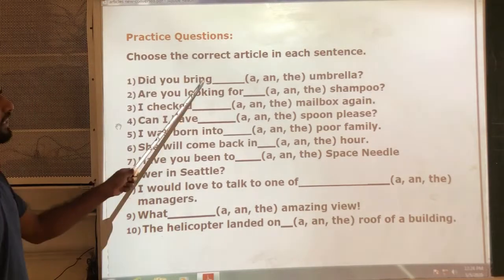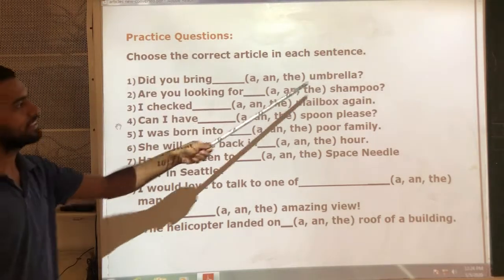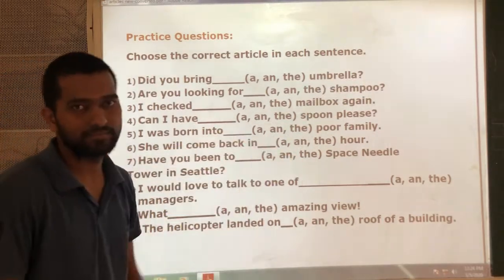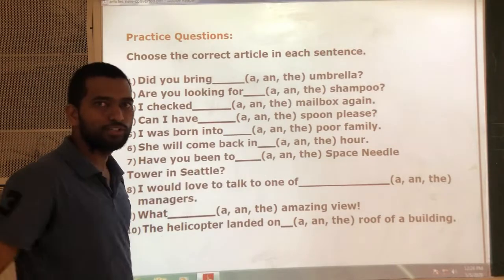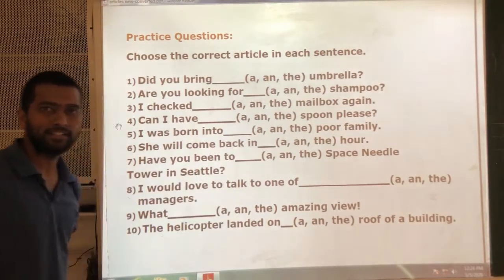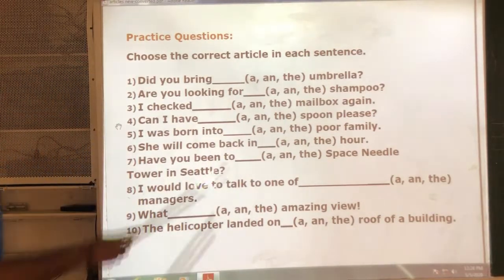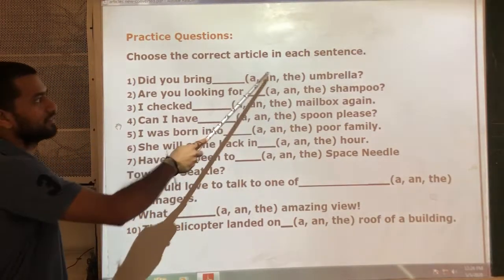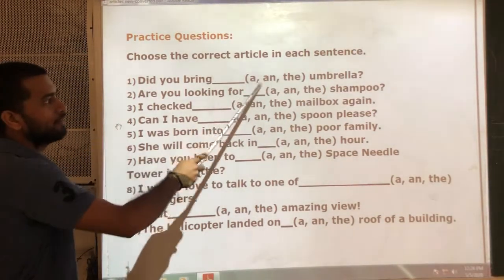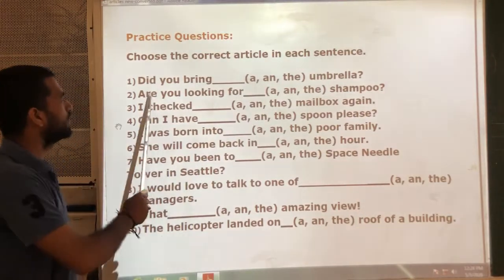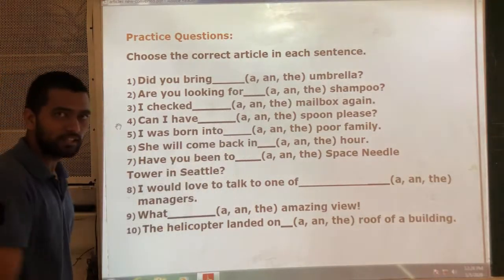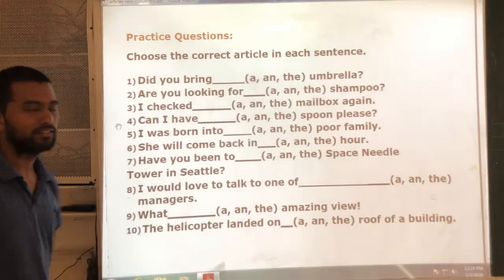Here are some practice questions — choose the correct article for each sentence. First question: 'Did you bring ___ umbrella?' Umbrella starts with a vowel sound, so 'an' is the correct answer. Did you bring an umbrella?